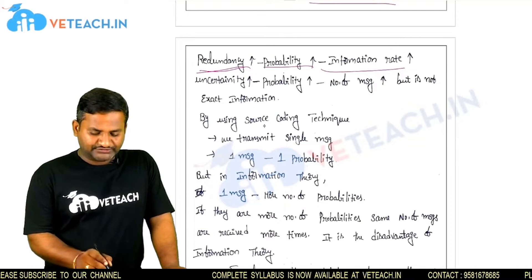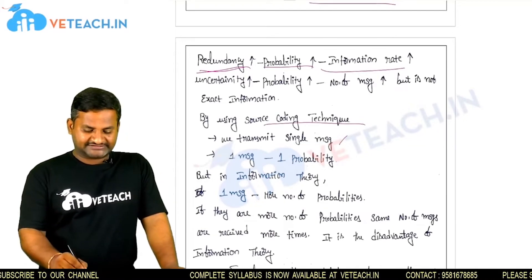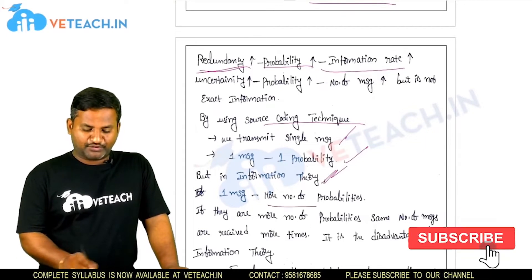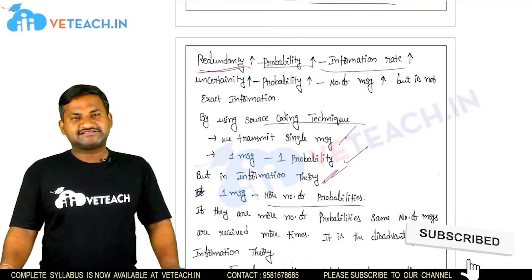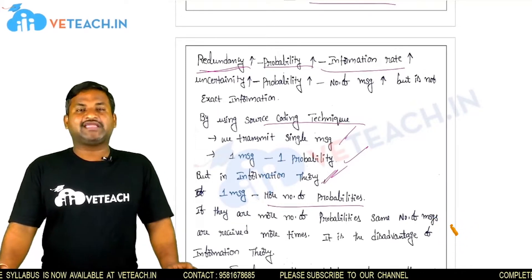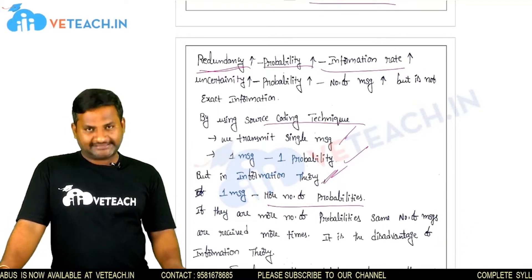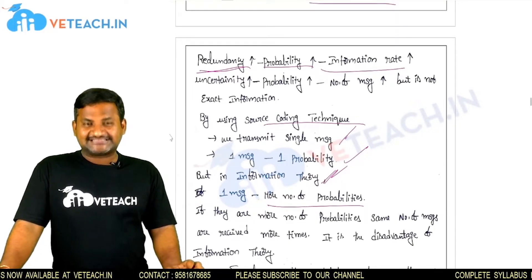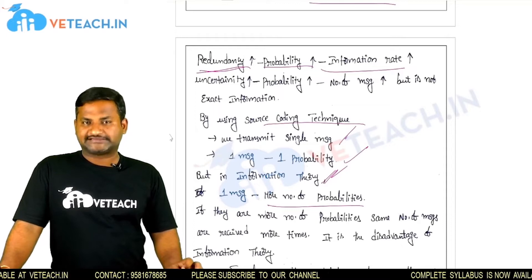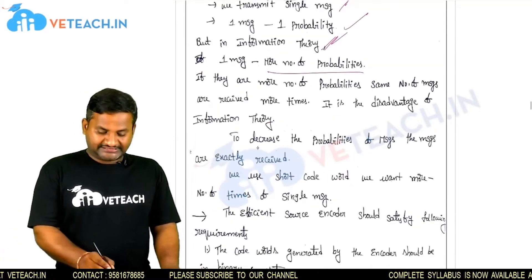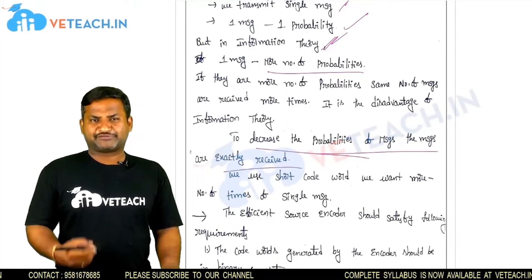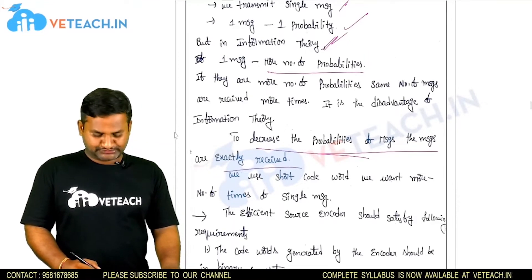By using source coding technique, we can transmit a single message with one probability — no problem. But in information theory, one message may represent more number of probabilities. If one message represents more number of probabilities, then the redundancy is very high. To reduce the redundancy and uncertainty, we introduce the concept of source coding. To decrease the uncertainty of messages being exactly received, we use source coding.